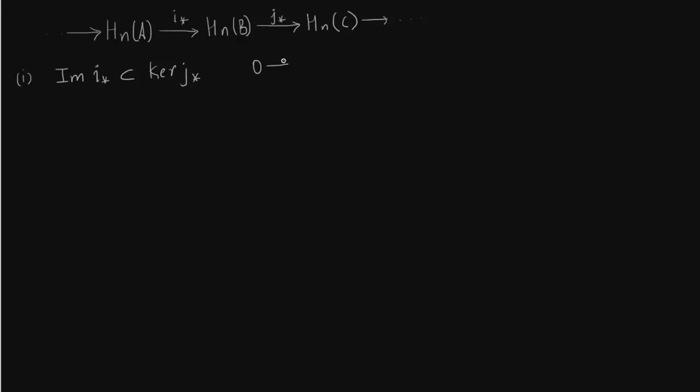So first write down the chain sequence. We have 0 → An → Bn → Cn → 0. You have i here, j here, and we have j∘i = 0 which obviously implies j*∘i* = 0. This is like standard. So that means i* lies in kernel of j* because j*∘i* = 0. Now the reverse inclusion.